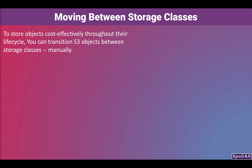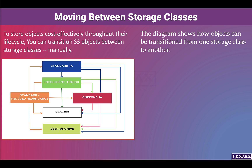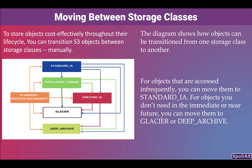To store objects cost-effectively throughout their lifecycle, you can transition S3 objects between storage classes manually or using a lifecycle configuration. For objects accessed infrequently, you can move them to Standard IA; for objects not needed in the immediate or near future, you can move them to Glacier or Deep Archive. Moving objects can also be automated using a lifecycle configuration.